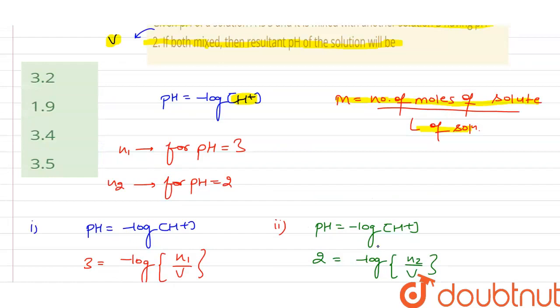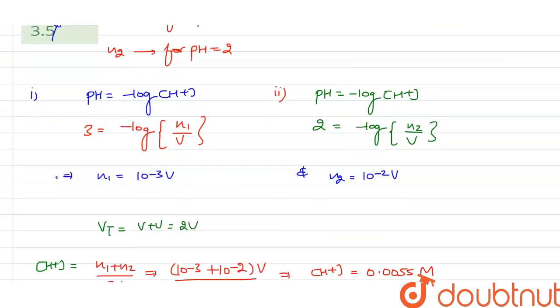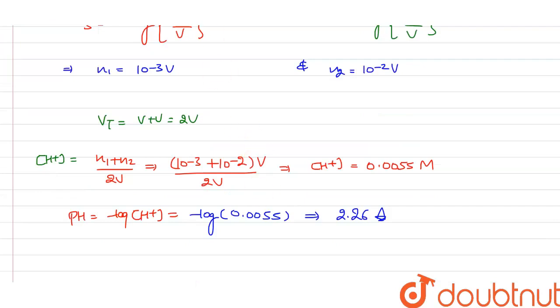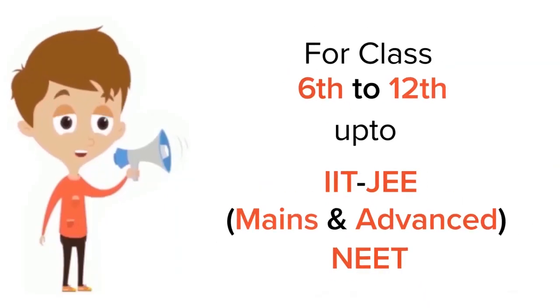So on overall solving it, we get the pH as 2.26. So the resultant pH will be 2.26, which is not matching with any of our options. So here our answer 2.26 will be the right answer. I hope you got my point, thank you.